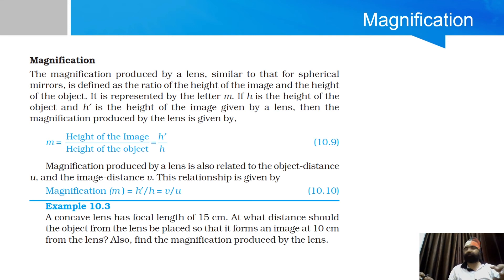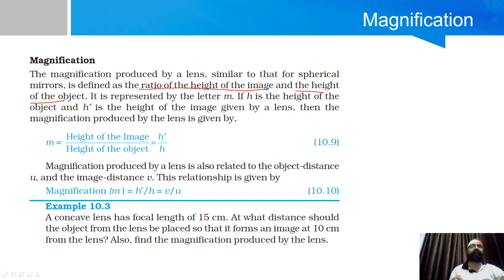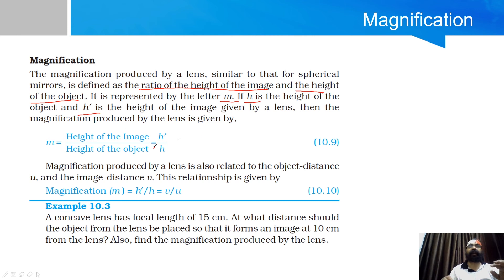So what is magnification? Magnification is very simple. Magnification is the ratio of image size and object size. The magnification produced by a lens is defined as the ratio of the height of the image and the height of the object. We call magnification and represent it with the letter M. If we represent the object's height as h and the image's height as h', then the magnification M is equal to h' by h.